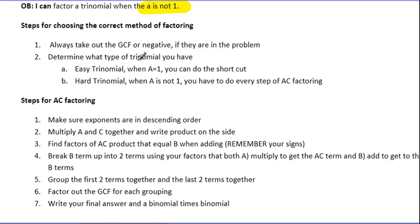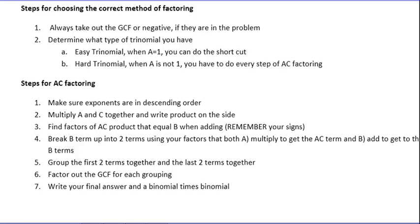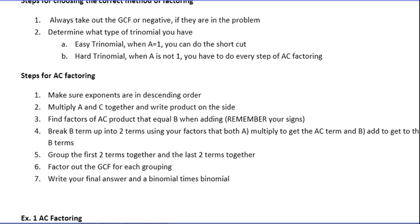Number two, if you have a trinomial, you have to determine what type of trinomial you have. You have to look at the lead coefficient. We consider it an easy trinomial when A equals one. And that allows you to do the shortcut that you learned over the last two lessons. When A is not one, you're going to have to go ahead and do every step of AC factoring. There are no shortcuts to these problems.